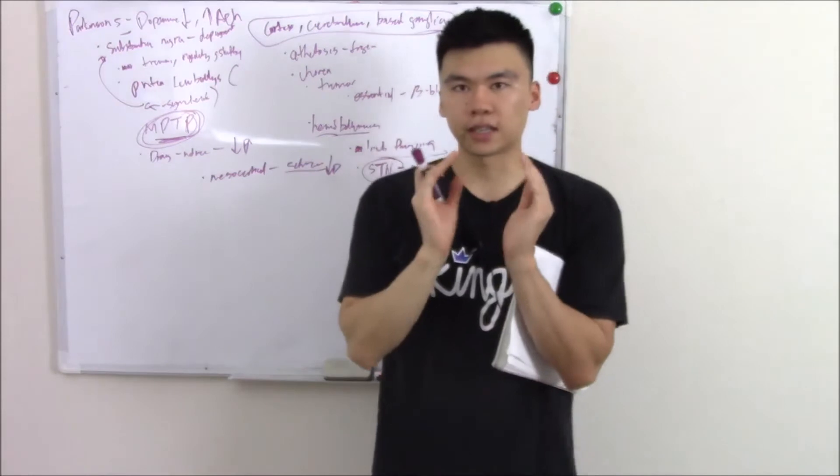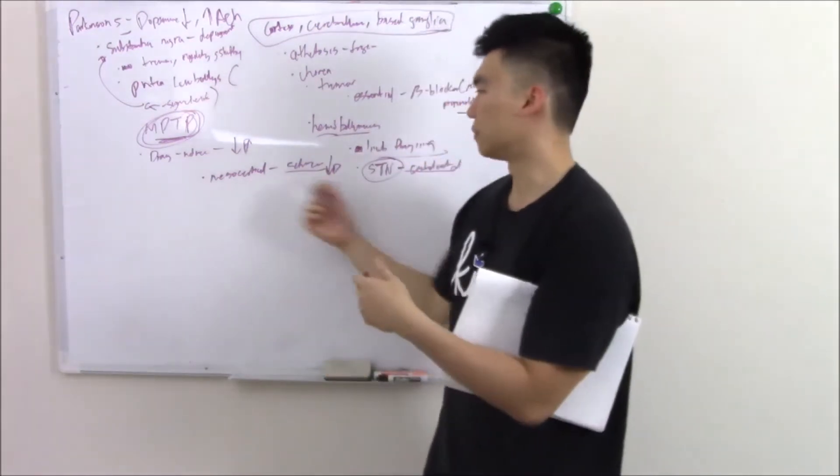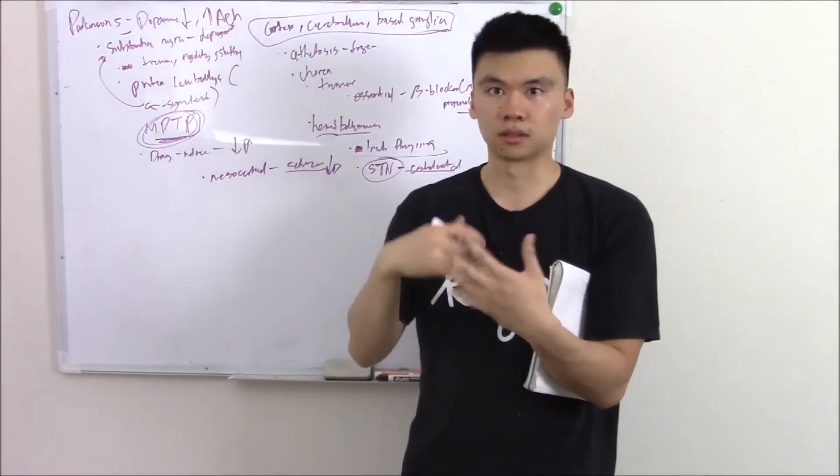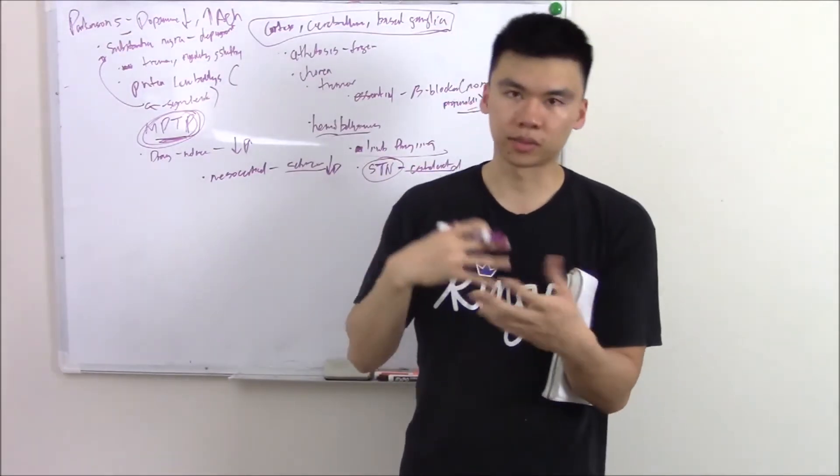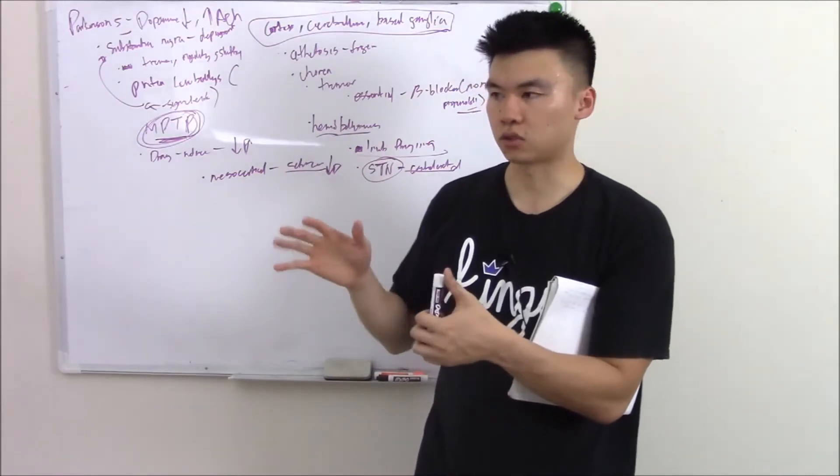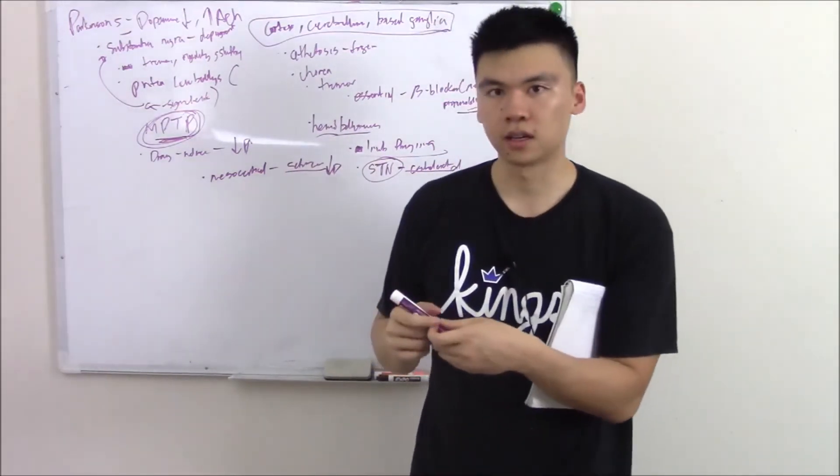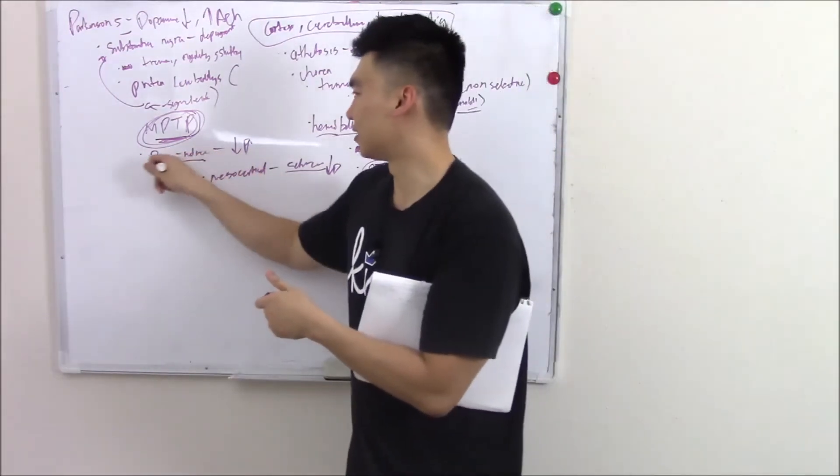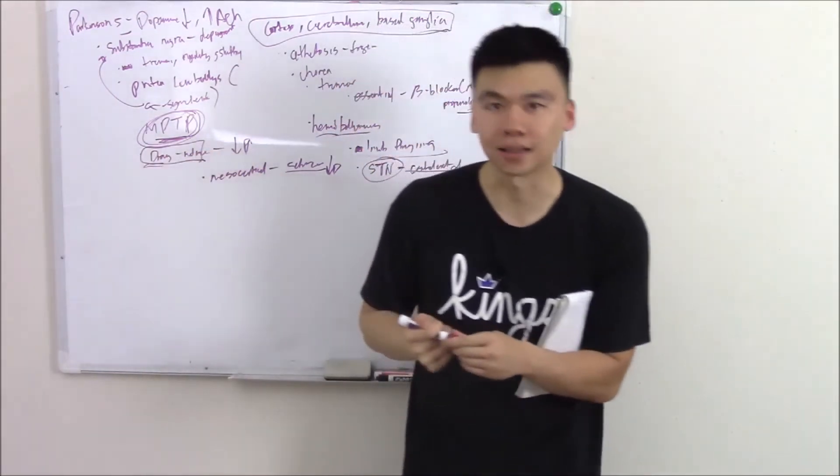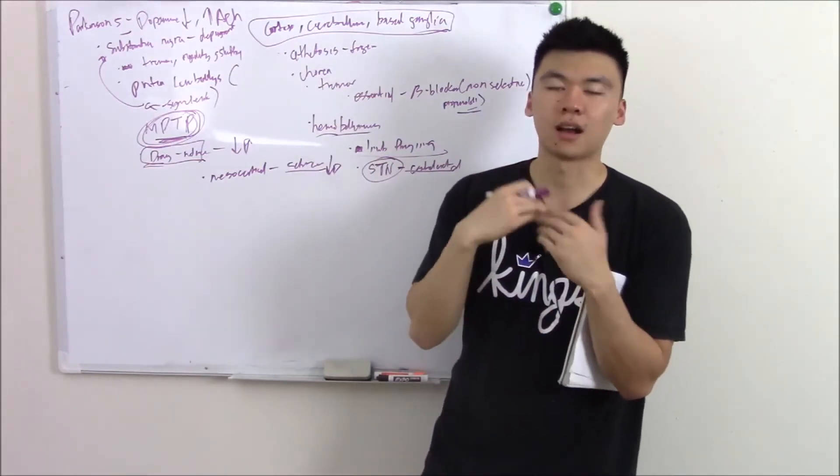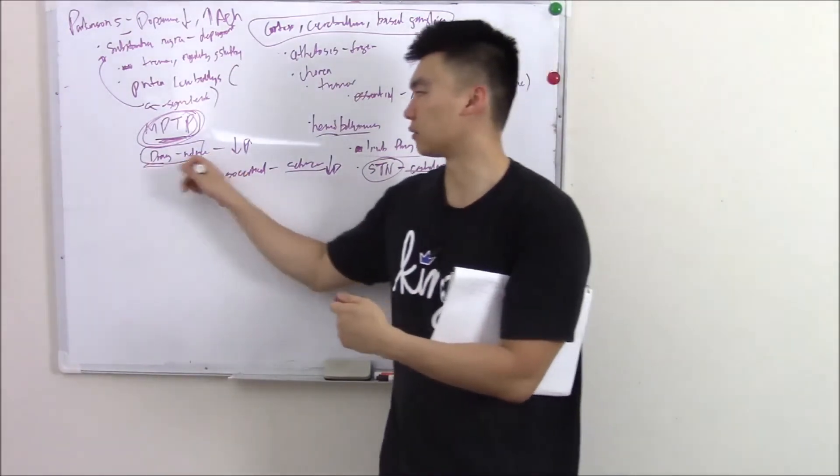So be very careful. They give you a question about a young patient that's having a history of psychiatric disorders, schizophrenia, delusions, disorganized speech, the whole nine yards, and they're given a drug and then all of a sudden they have tremors and shuffling gait. They don't have Parkinson's. They have drug-induced Parkinson's signs. The question stem will be very obvious for it as long as you're looking out for it.